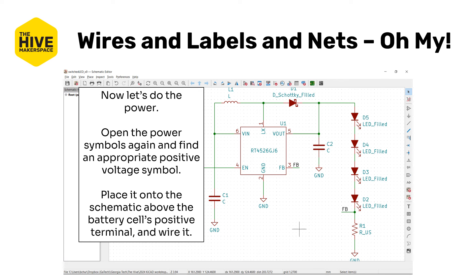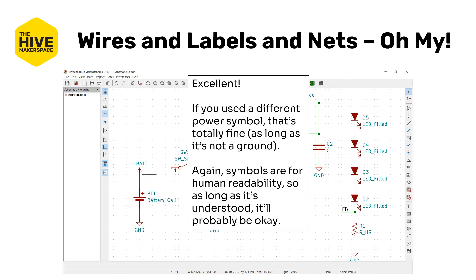We're going to do the same thing for the positive power symbol. Open the power symbol menu and find an appropriate positive voltage symbol — three volts, VBAT, VDD, VCC — whichever seems appropriate. Place it above the battery cell's positive terminal and wire it up. It should look something like this. If you use a different power symbol, that's totally fine. Symbols and schematics are really for you to read.